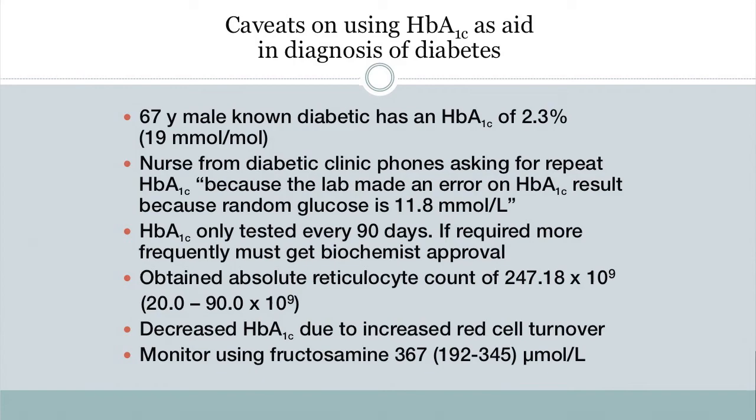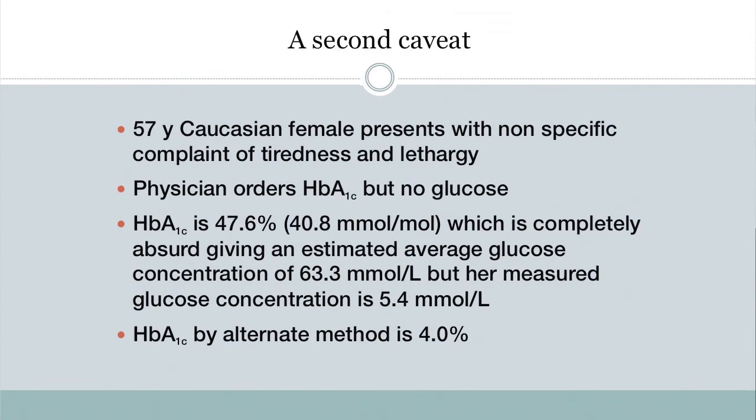His A1c was low because he was turning over red blood cells at a greatly increased rate. So now glucose is telling us one story and A1c is telling us another. We then used a test called fructosamine — essentially glycated protein — and found it was elevated above the reference interval, confirming poor glycemic control.